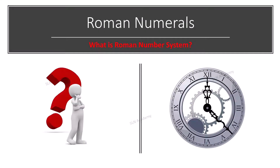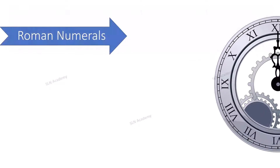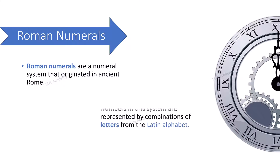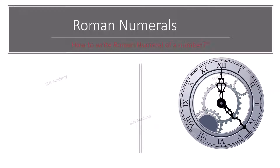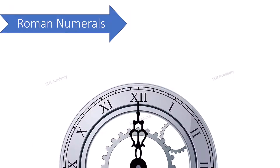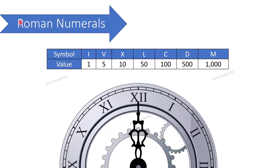What is the Roman number system? Roman numerals are a numeral system that originated in ancient Rome. Numbers in this system are represented by a combination of letters from the Latin alphabet. In the Roman numeral system, seven letters of the alphabet each with a fixed integer value are used: I = 1, V = 5, X = 10, L = 50, C = 100, D = 500, and M = 1000.